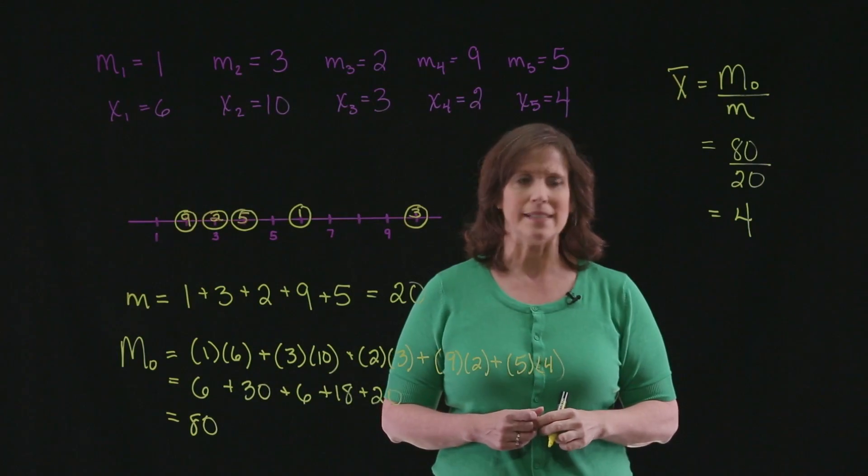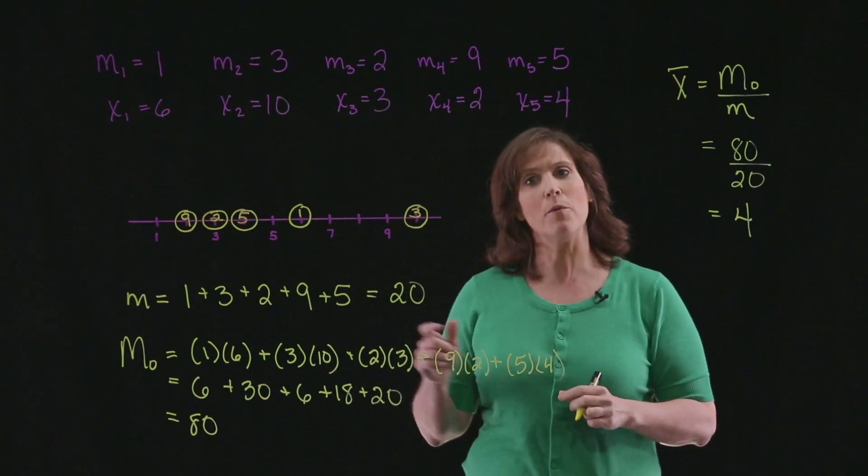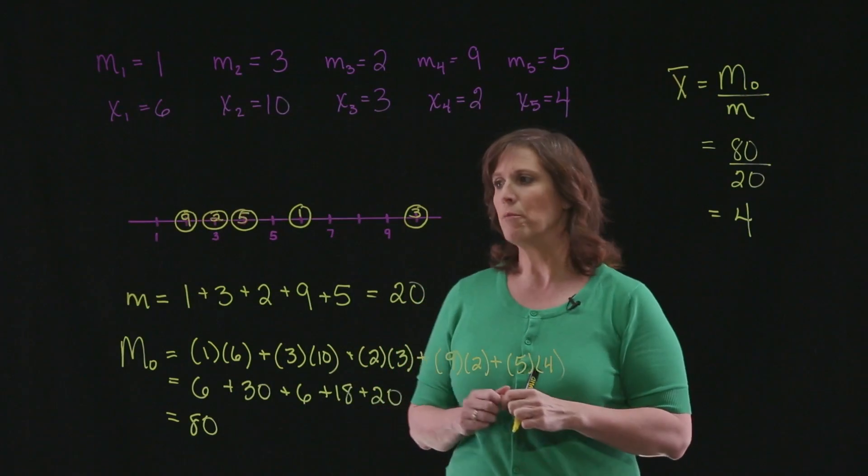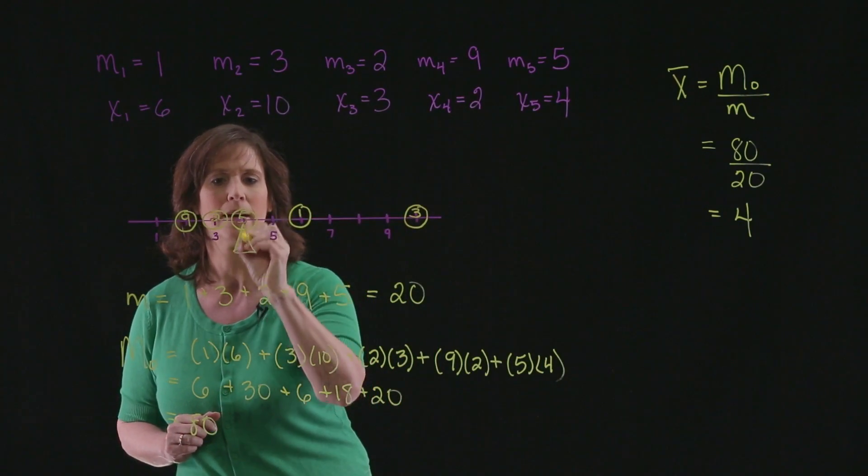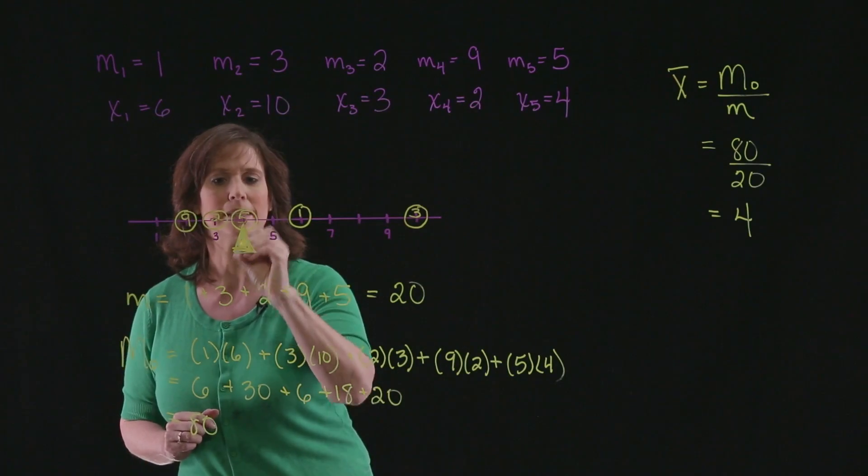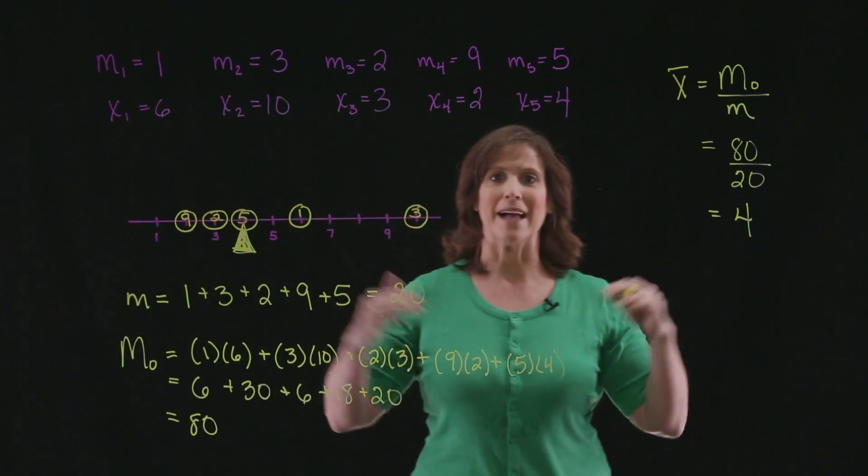Now, what does this mean exactly? Well, it means that if I were to think of this number line as a seesaw and I put the fulcrum right at 4, right here, my seesaw will balance.